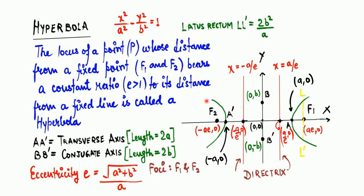We have foci F1 and F2. Just like in ellipse we had a latus rectum, here also we have a latus rectum LL', given by 2b²/a. So this length can be calculated using 2b²/a. The eccentricity can be calculated using the formula: e = √(a² + b²) / a.